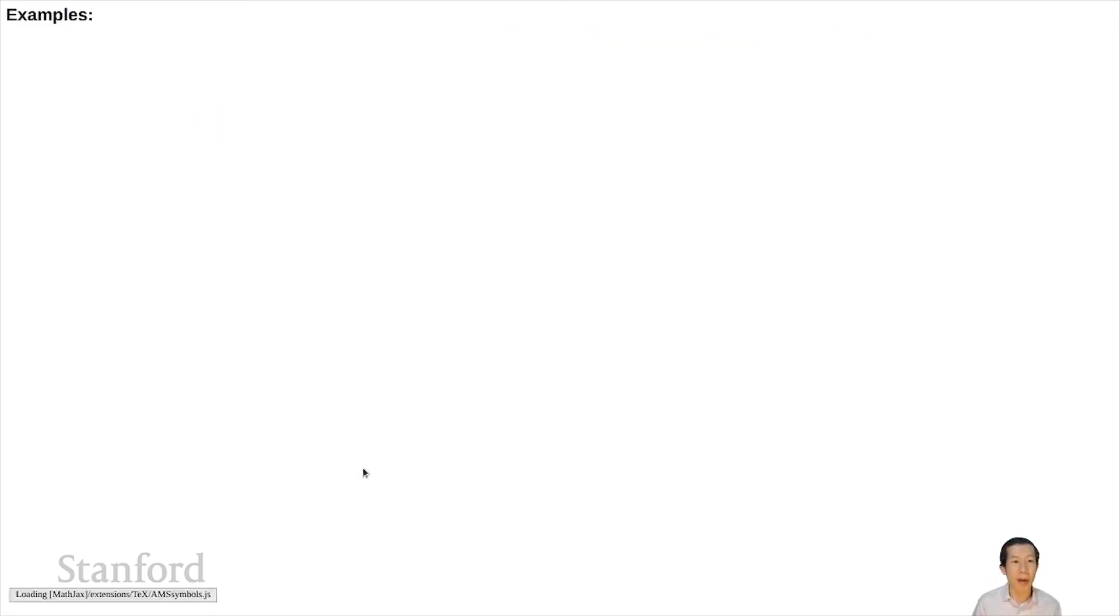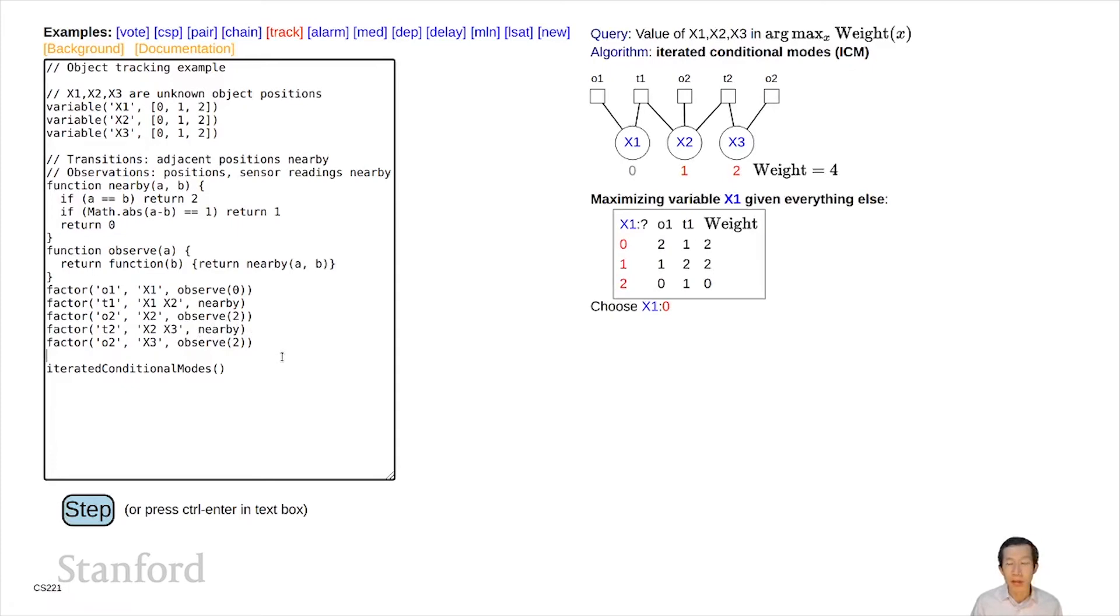Here is a demo on the object tracking example. At the start of the algorithm, we're going to initialize with a random assignment 0, 1, 2, which has a weight of 4. Now I'm going to try to maximize variable x1 given everything else. Let's consider alternative values of x1. It could be 0, 1, or 2. For each of these, I'm going to compute its weight only evaluating the factors that touch x1. In this case, it's only O1 and T1 that touch x1. Compute the weights, choose the best one breaking ties arbitrarily. So I choose x1, 0, which means I didn't change.